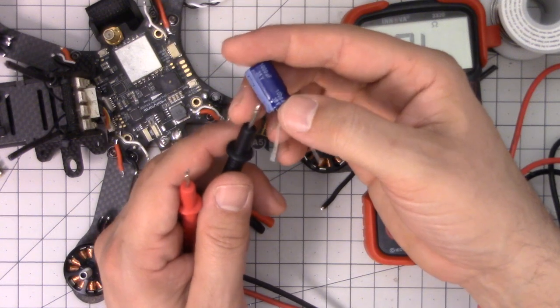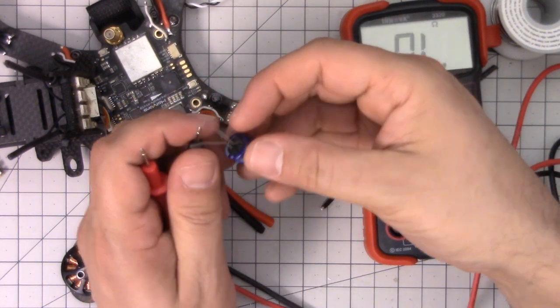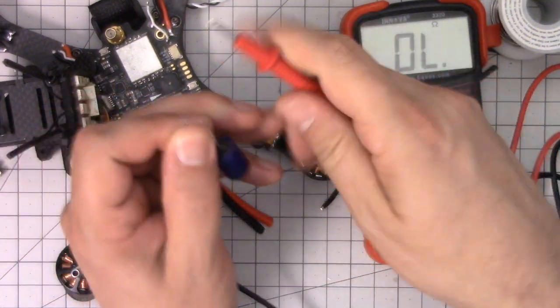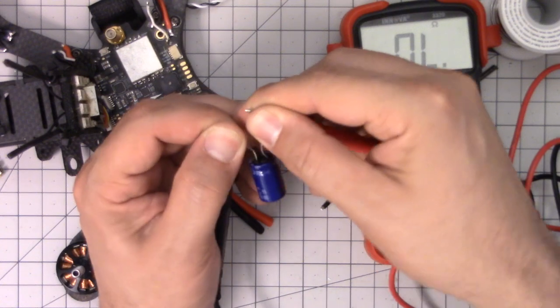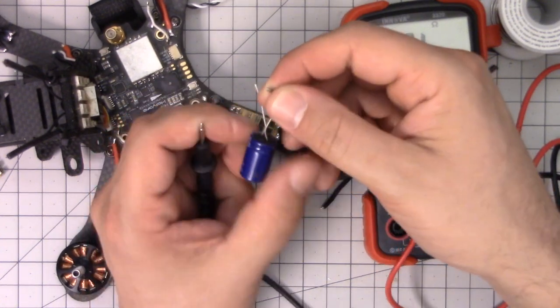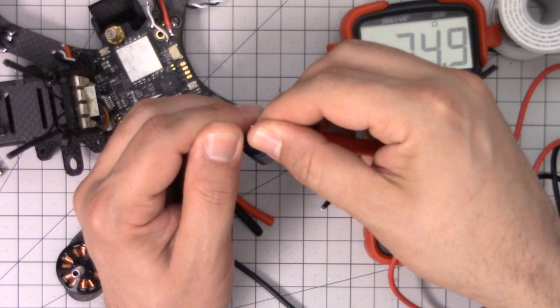So again I'll demonstrate. If I go the black to the negative and the red to the positive, the capacitor will only let electricity flow one direction though. So if I take the leads one way, nothing happens. But if I flip the capacitor over, we get a beep and then it stops.